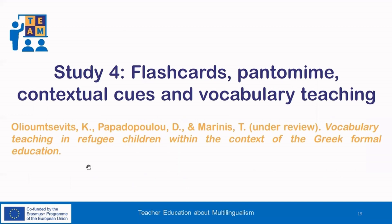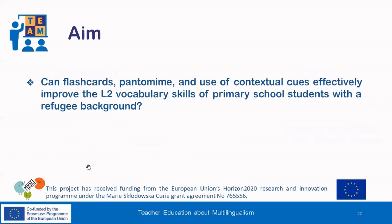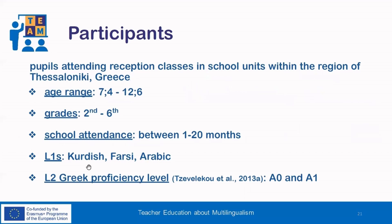The last study we will talk about in this video is by Olyumcevic, Vodopoulou and Marinis, which is under review. We will discuss vocabulary teaching through flashcards, pantomime and contextual cues. The main objective was to investigate whether flashcards, pantomime and use of contextual cues can effectively improve the second language vocabulary skills of primary school students with a refugee background. Participants were primary school students between the ages of around 7 and 12, attending reception classes in Greece for a period of 1 to 20 months. Their language background involved one or two of the following languages: Kurdish, Farsi, Arabic. Their Greek as a second language proficiency level was found to be between A0 and A1.